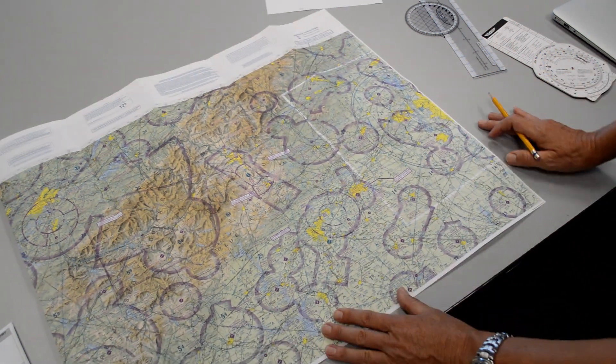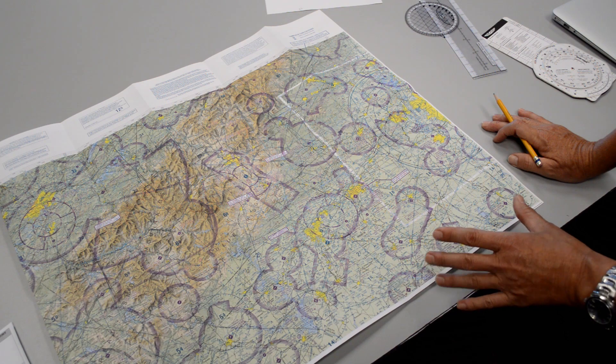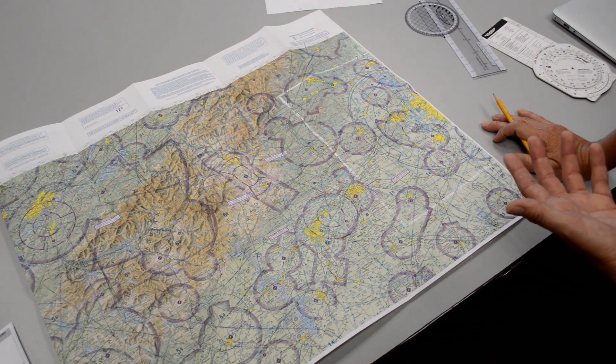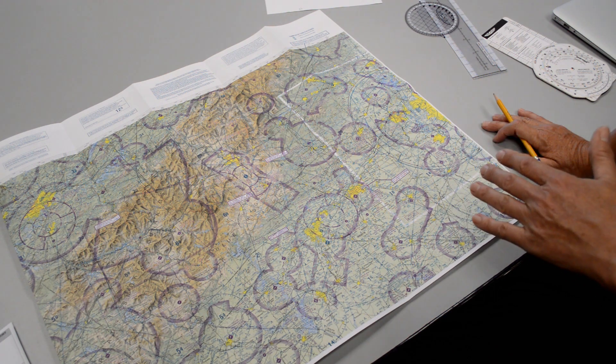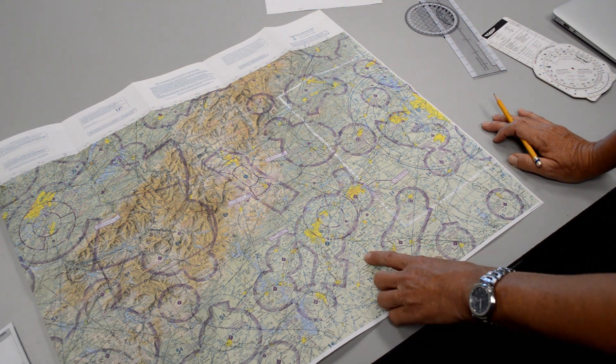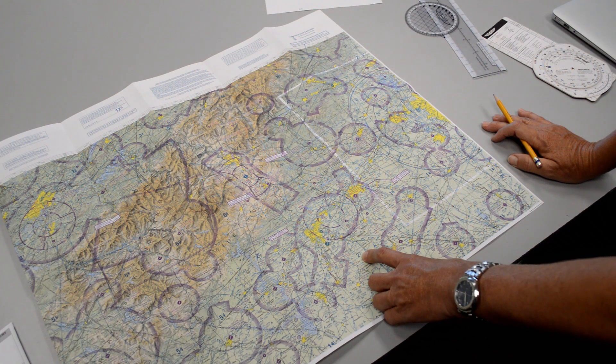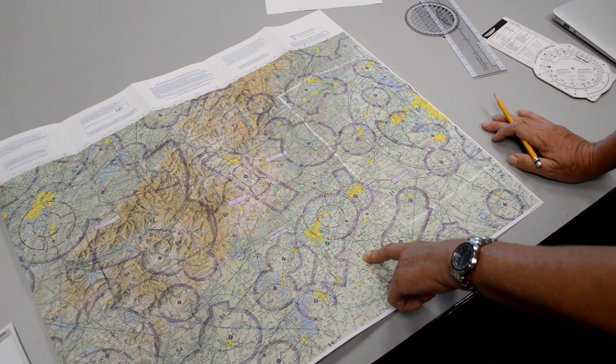So again what that lets me know is that's the highest obstacle in that grid box. Let's say for example clouds started moving in or forming and I was forced to go to a lower altitude I could quickly look at this number and realize that I would be safe as far as obstacle clearance if I went down that low.